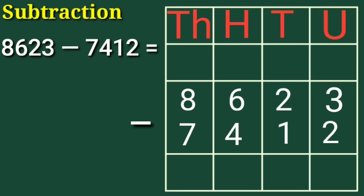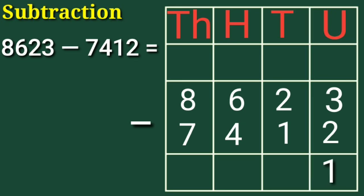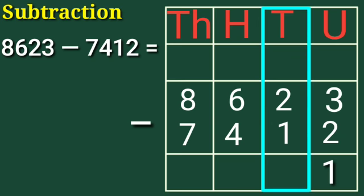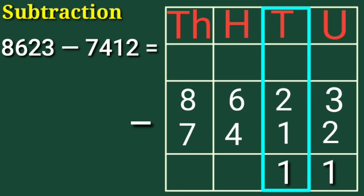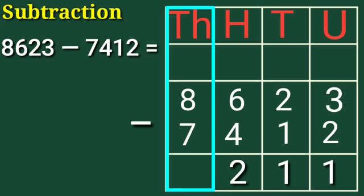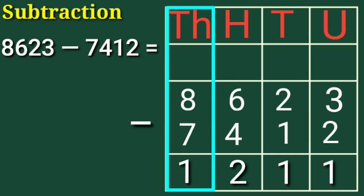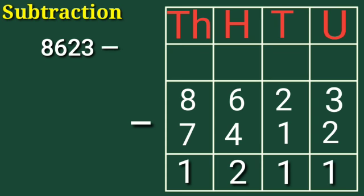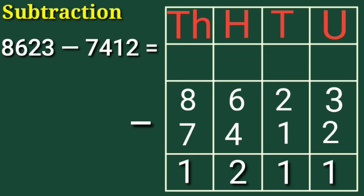Now children, start from the units side. Subtract units: 3 minus 2 is equal to 1. Write 1 in the units column. Subtract tens: 2 minus 1 is equal to 1. Write 1 in the tens column. Subtract hundreds: 6 minus 4 is equal to 2. Write 2 in the hundreds column. Subtract thousands: 8 minus 7 is equal to 1. Write 1 in the thousands column. So 8,623 minus 7,412 is equal to 1,211.